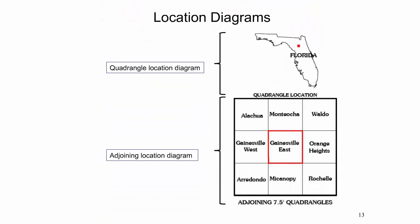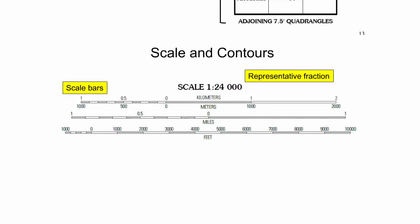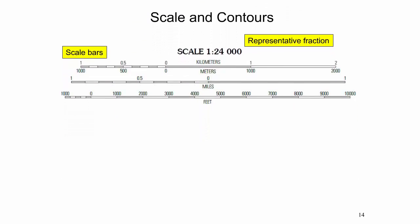The quadrangle location diagram indicates the location of a quadrangle within the state, while the adjoining location diagram shows the quadrangles adjacent to the current map. In this example, the diagram lays out the eight quadrangles surrounding the Gainesville East quadrangle. The map collar further shows the map scale, expressed as a representative fraction. At this scale, one inch is equal to 24,000 inches, or 2,000 feet. Scale bars are provided both in metric and US units, and are particularly useful for measuring distances and point coordinates on paper plots of US Topo maps.